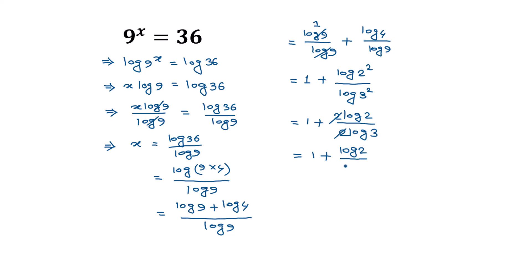Since log a divided by log b can be written as log base b of a, the term log 2 divided by log 3 becomes log base 3 of 2. So the value of x is equal to 1 plus log base 3 of 2, and this is the solution of our given equation. If you like this video please subscribe to my channel. Thanks for watching.